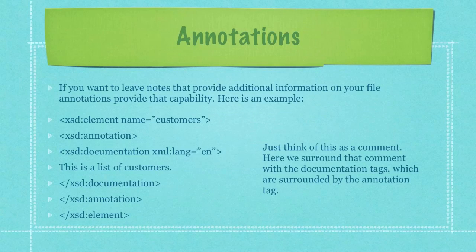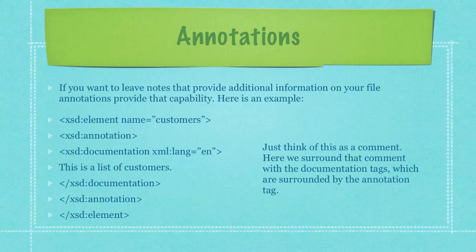If you want to leave notes that provide additional information in your file, annotations provide that capability. Here's an example where I'm defining an annotation stating this is a list of customers and that I'm using the language English. You can just think of this as a comment — the comment is surrounded by documentation tags, which are surrounded by annotation tags.